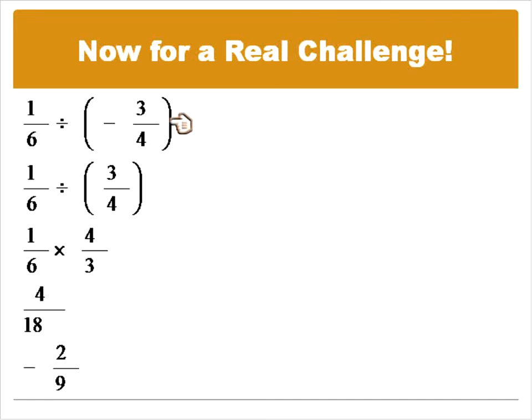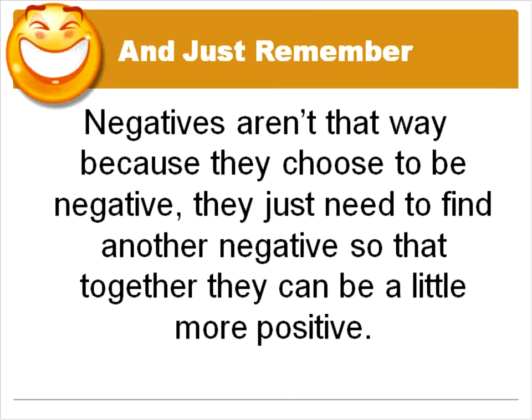By removing that negative, it makes the math a little bit more simple, and then at the end you can put in the correct answer. This works, again, for multiplication and division only — do not try to count the number of negatives when you're adding or subtracting, it just won't work the same way. So just a friendly reminder as we leave: negatives aren't that way because they choose to be negative — they just need to find another negative so that together they can be a little more positive.